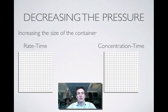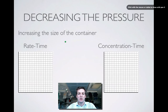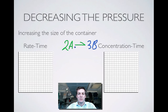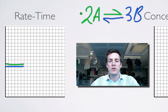Now let's look at the opposite change — a decrease in pressure, so this time we've made the container bigger. We're going to use a reaction that does change: 2A turning into 3B in the forward direction, and 3B turning back into 2A in the backward process. The rates start off at the same height because the system is at equilibrium. If I decrease the pressure, there are fewer particles per unit volume, so the chances of collisions falls — the forward reaction slows down, and so does the backward reaction. So both rates are going to fall.